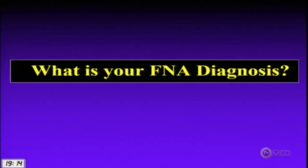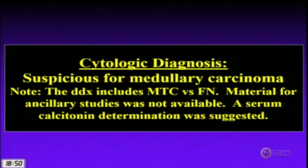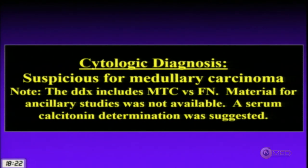With a thyroid lesion showing those features, you'd be thinking medullary carcinoma. We categorized it as suspicious for malignancy — suspicious for medullary carcinoma — with a differential of medullary carcinoma versus follicular neoplasm. Material for ancillary studies was not available. When you're worried about medullary cancer without calcitonin staining, contact the clinician and request a serum calcitonin. That was suggested.